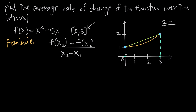So we take 2 minus 1, and then we divide that by the endpoints of the interval — the right endpoint minus the left endpoint. We're talking about the interval from 0 to 3, so we say 3 minus 0. When we simplify, 2 minus 1 is 1, and 3 minus 0 is 3. So we can say that the average rate of change is 1 third.